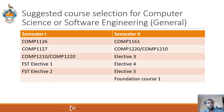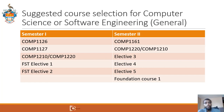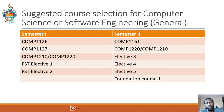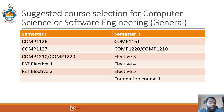In the first semester, you should sign up for Comp 1126 and 1127, and either Comp 1210 or 1220. Then take two electives from within the faculty. Assuming you pass both 1126 and 1127, you take Comp 1161 in the second semester, and whichever one of 1220 or 1210 that you did not take in Semester 1. Then you can take three electives from anywhere in the University, including within the Faculty of Science and Technology, and then take your first foundation course.